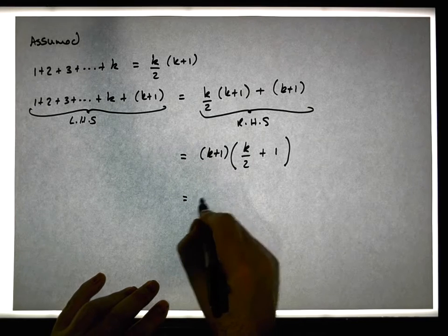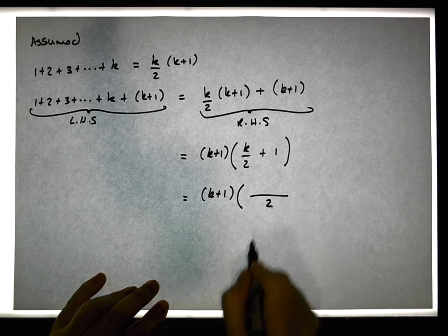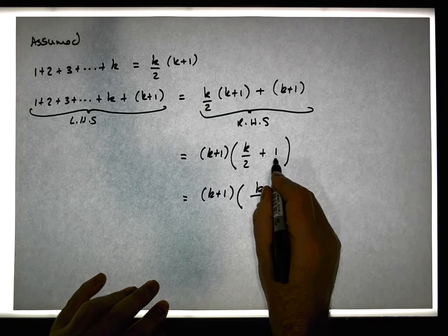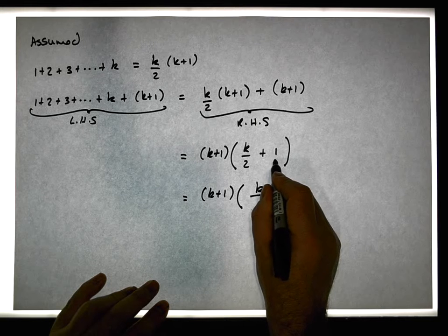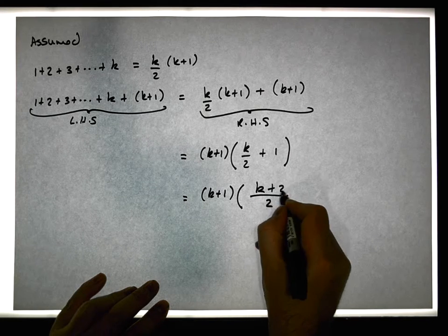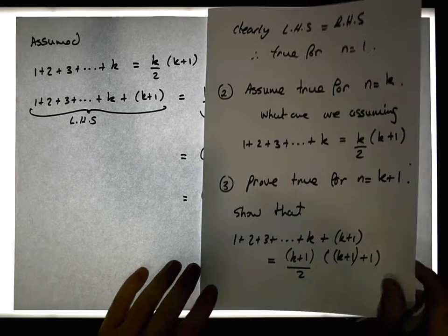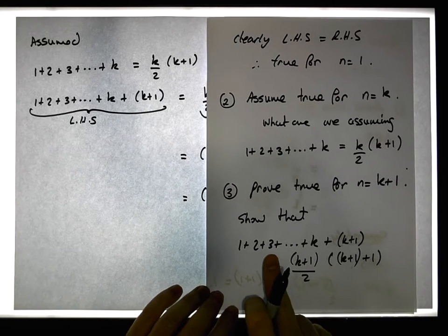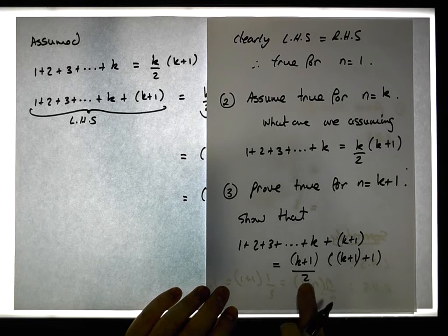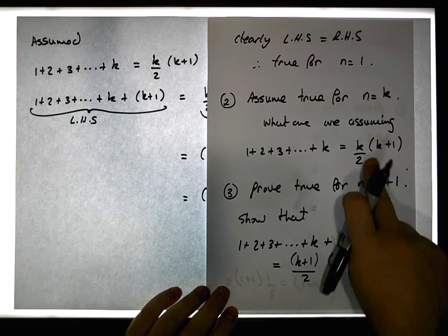We can get a common denominator here. This gives us k plus one times — the common denominator is two. Two into two goes once, so once times k gives us k, and one over one means one into two goes twice, giving us plus two. Keep in mind that what we're trying to show is that one plus two plus three all the way through to k plus k plus one equals k plus one over two times k plus one plus one.